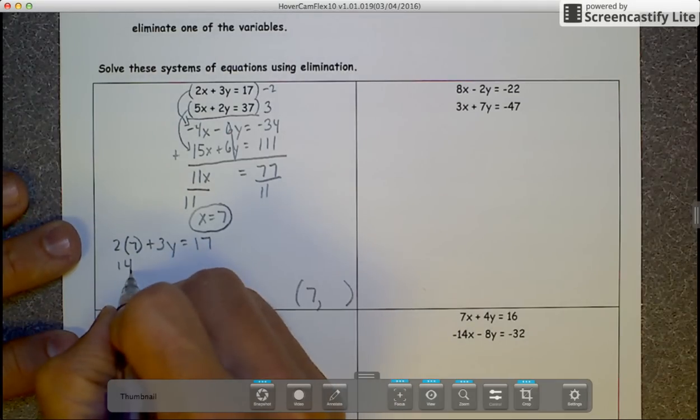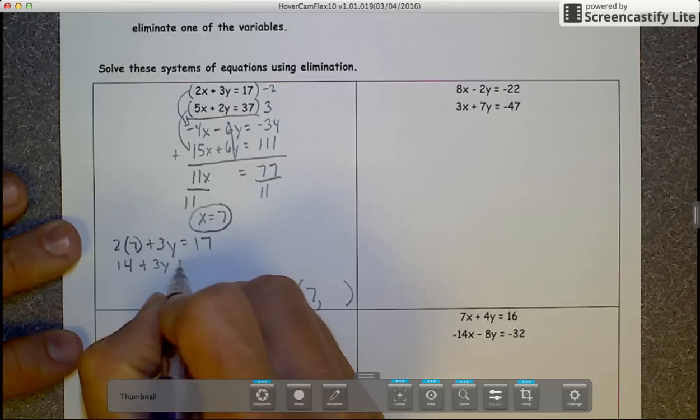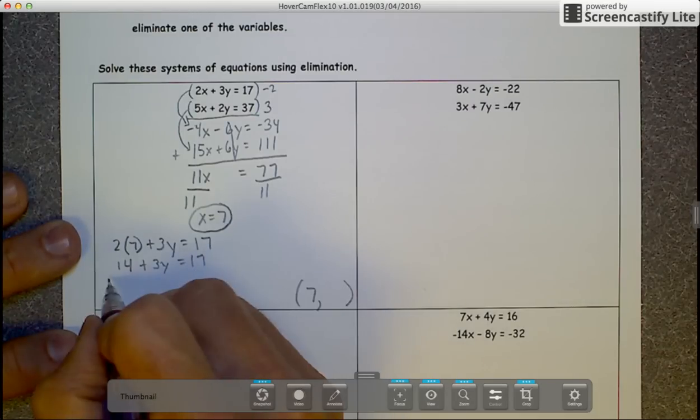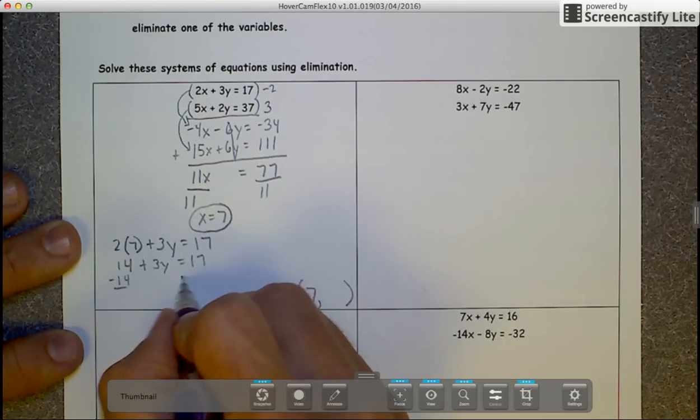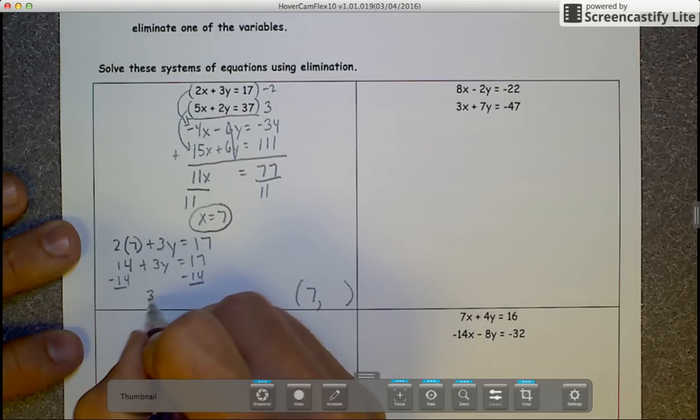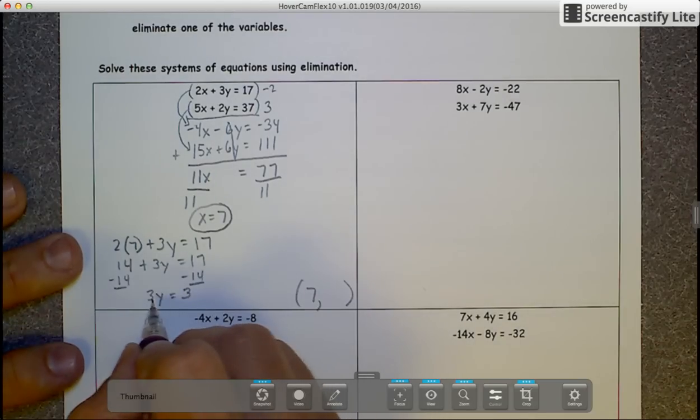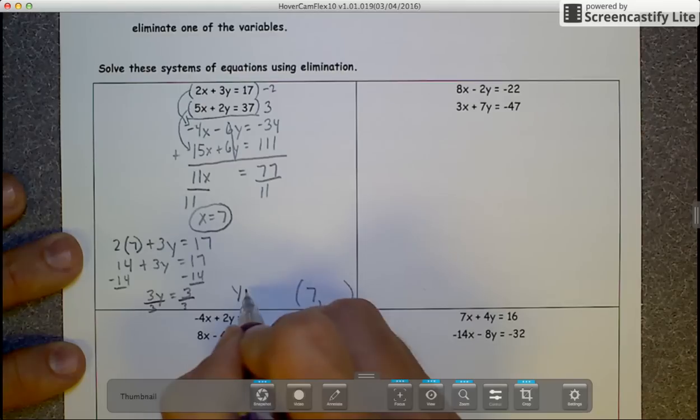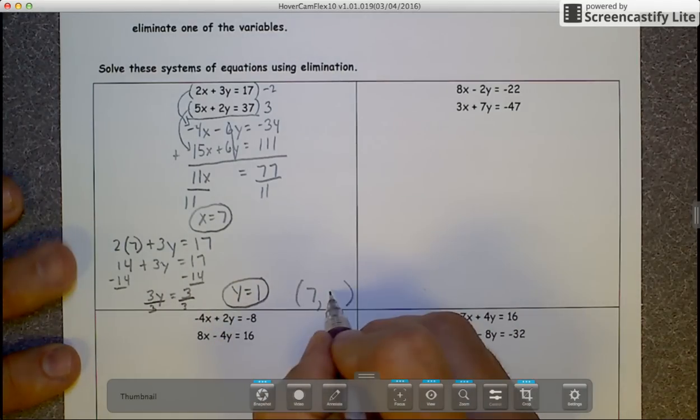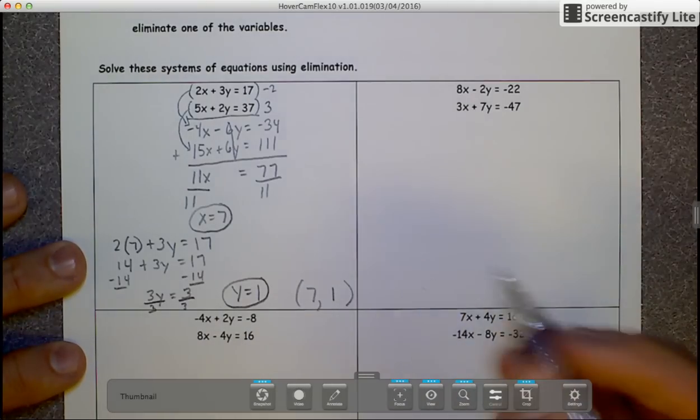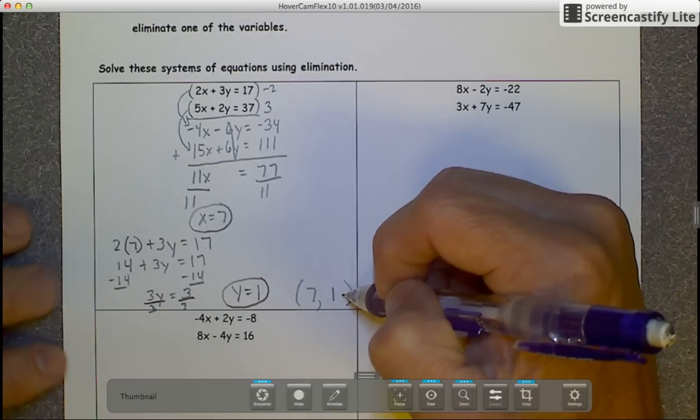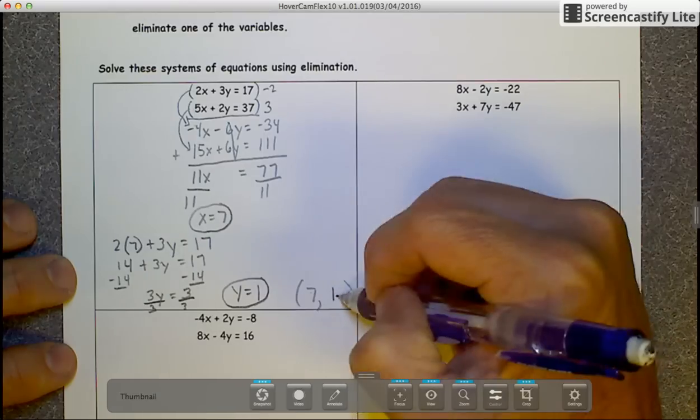2 times 7 is 14 plus 3y equals 17. Subtract 14 from both sides: 3y equals 3. Divide by 3, you get y equals 1. So my coordinates of the point, the solution where they intersect, is positive 7 comma positive 1.